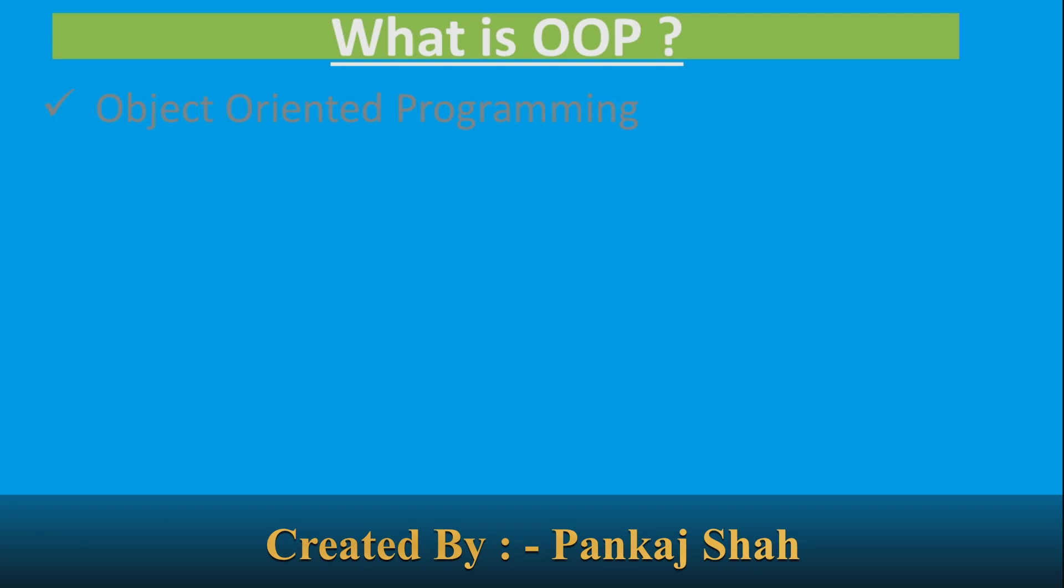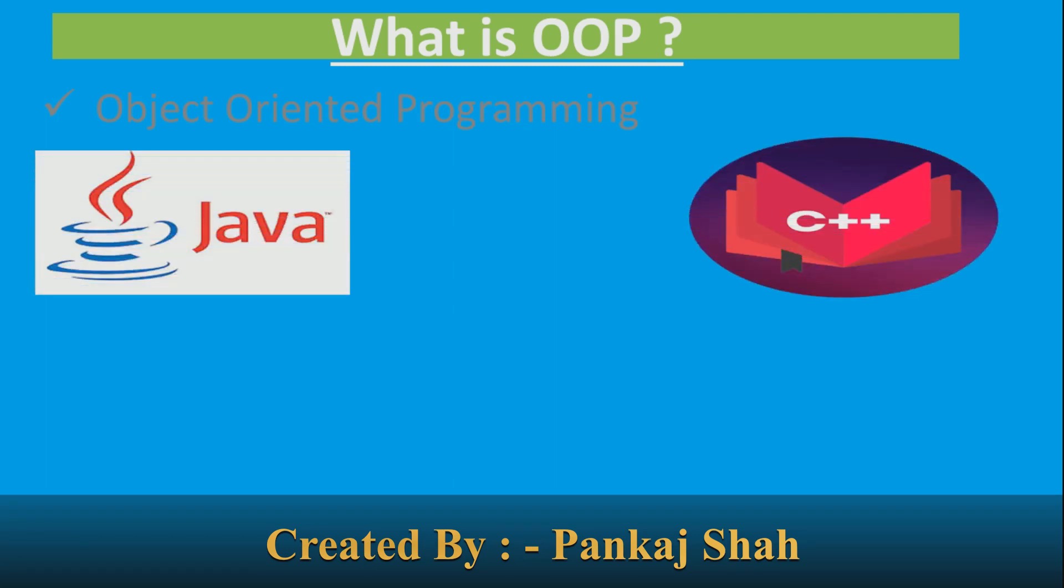Reduced maintenance cost and improved flexibility for future revisions. Examples of object oriented programming are C++ and Java.